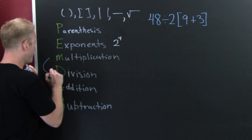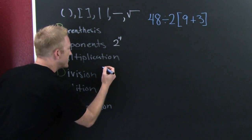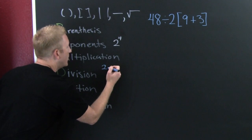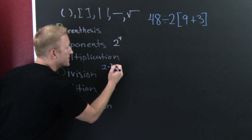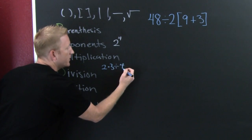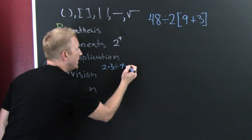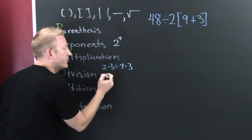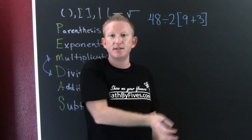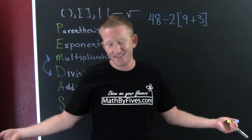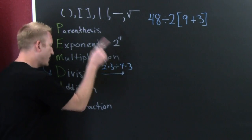Multiplication and division go from left to right when they're written next to each other. For example, if you have two times three divided by four, you go from left to right — a Karate Kid moment. We'll see that in a moment.